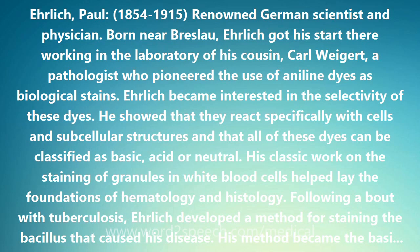Born near Breslau, Ehrlich got his start there working in the laboratory of his cousin, Karl Weigert, a pathologist who pioneered the use of aniline dyes as biological stains. Ehrlich became interested in the selectivity of these dyes. He showed that they react specifically with cells and subcellular structures, and that all of these dyes can be classified as basic, acid, or neutral. His classic work on the staining of granules in white blood cells helped lay the foundations of hematology and histology.